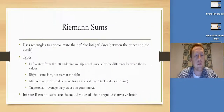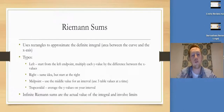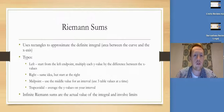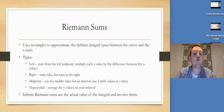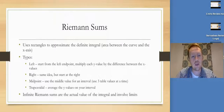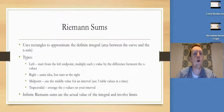The Riemann sum is basically using rectangles to approximate the definite integral, which is the area between the curve and the x-axis. We've got our left, right, midpoint, and trapezoidal — you guys are all pretty good at these. Then we've got our infinite Riemann sums, which are the actual value of the integral and they involve limits and summation notation.